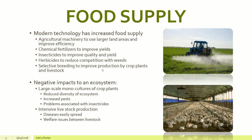A lot of these are actually quite self-explanatory, but we'll go through a couple. The syllabus wants you to understand that modern technology has been used to increase food supply — agricultural machinery, chemical fertilizers, insecticides that kill insects to improve the quality and yield of crops, herbicides to kill off weeds and reduce competition, and selective breeding which improves production by crop plants and livestock alike.